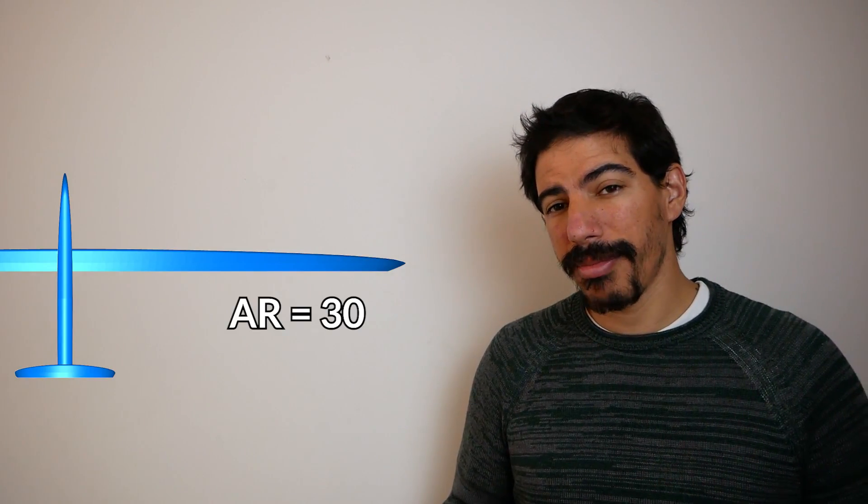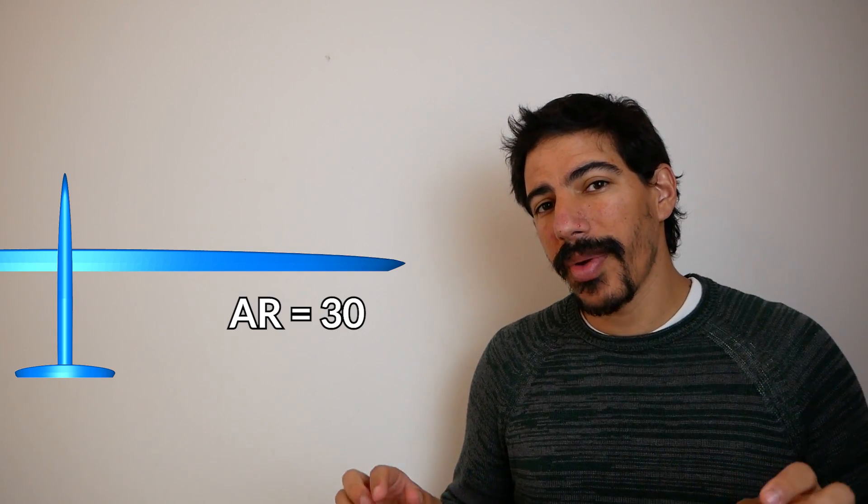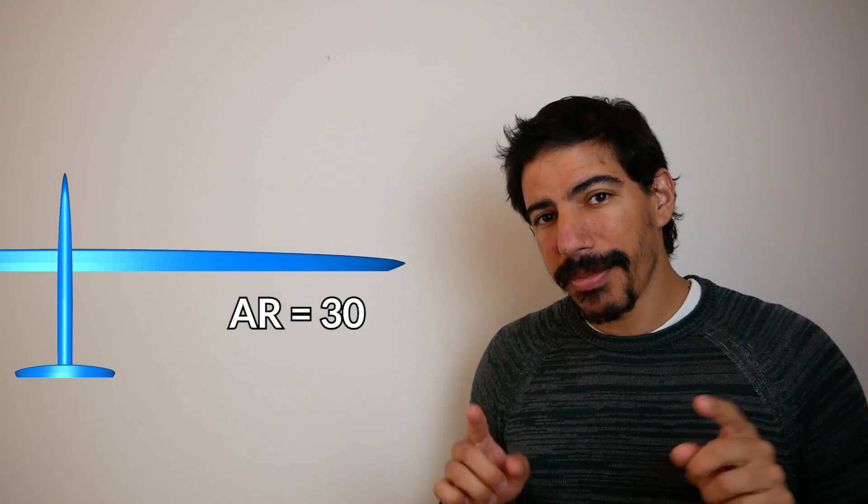Sail planes, for instance, take this to the extreme by having really long slender wings to minimize those wing tip vortices. In paragliders though, this performance comes at a cost because the higher the aspect ratio, the less stiff the internal structure of the wing is, meaning if there's a deflation, there's a lot more movement and it's a lot harder to recover.